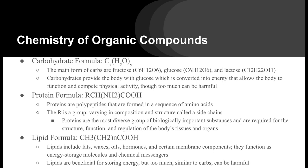The chemistry of organic compounds: the carbohydrate formula is carbon and hydrogen with hydrogen and oxygen, though there are variables that can change because there are many different types of carbohydrates. The main forms of carbohydrates are fructose, glucose, and lactose. Carbohydrates provide the body with glucose, which is converted into energy that allows the body to function and complete physical activity.